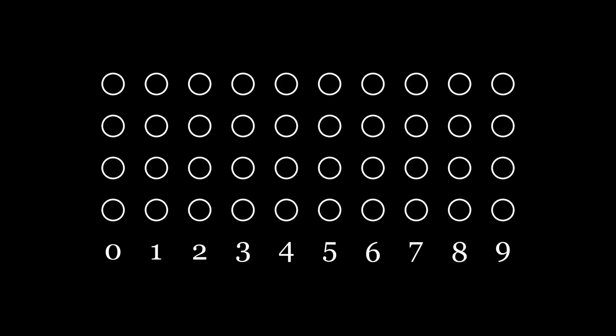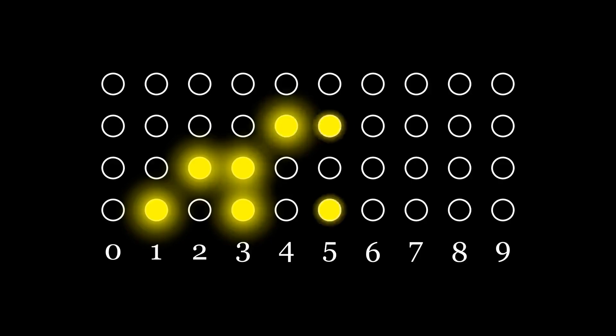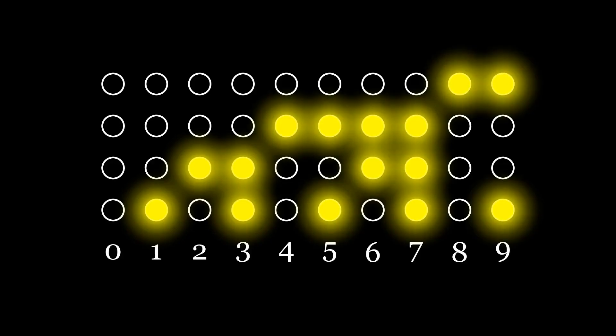Binary coded decimal is still decimal, but each digit is recorded as its binary representation, requiring 4 bits.